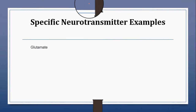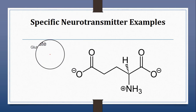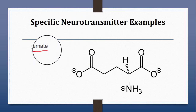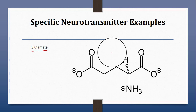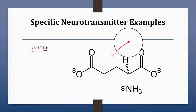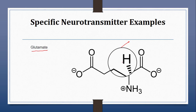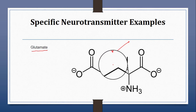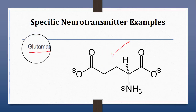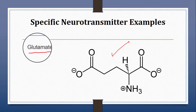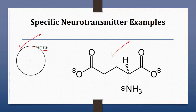Now for specific neurotransmitter examples. First is glutamate. As you can see on the screen, this is the structure of glutamate. Glutamate is typically synthesized within the neurons from glutamine and is the most abundant neurotransmitter in the brain. It is an excitatory neurotransmitter.